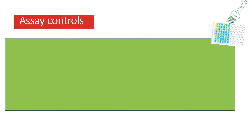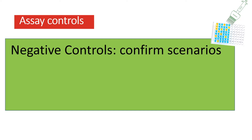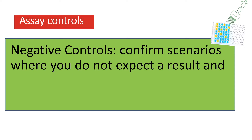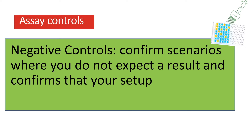A necessary control is a negative control. Negative controls allow you to confirm scenarios where you do not expect a result, and in that case it confirms that your setup is working. It involves either omitting the antibody used to capture the particular target or analyte, omitting the actual sample so there's nothing to give a result, or omitting the standard.